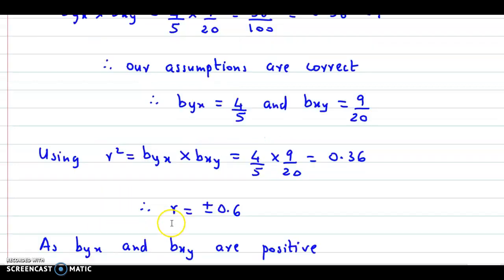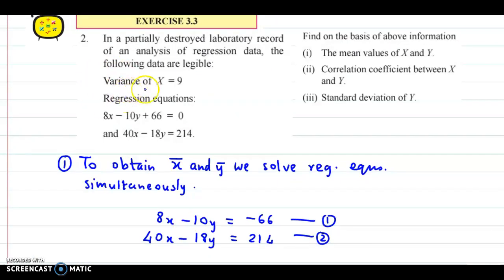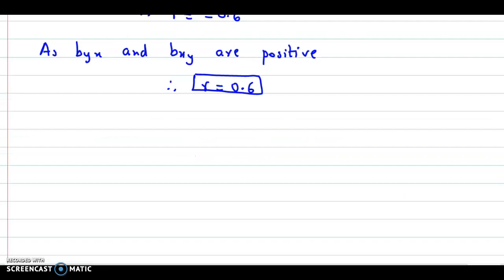Next we are asked about standard deviation of y. For this, variance is given. Variance of x is 9. So from here we get standard deviation of x as square root of 9, which is 3. And we need to find standard deviation of y. Now we can use the relation or formula for byx.